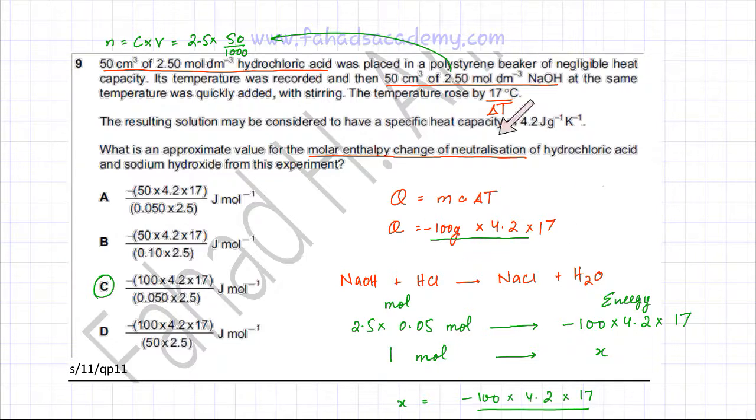This energy change was when you had 2.5 times 50 divided by 1000 moles of HCl and of NaOH, so 2.5 times 0.05 moles of NaOH and HCl produced this energy change.